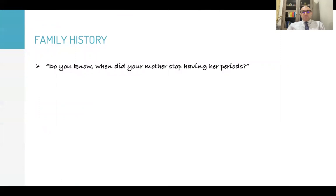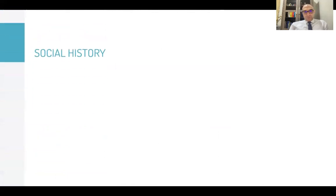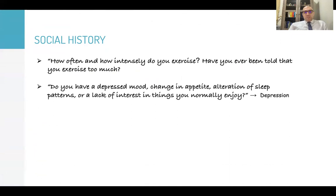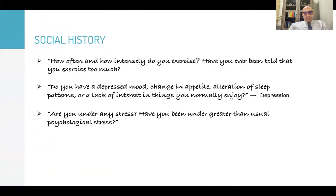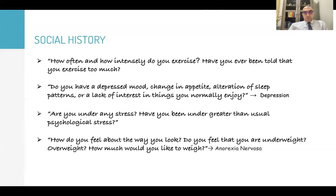Family history: 'Do you know when your mother stopped having her periods? Did anyone else in your family have early menopause? Has any member of your family been diagnosed with cancer?' — very important for familial cancer syndromes. Social history: 'How often and how intensely do you exercise? Have you ever been told that you exercise too much? Do you have depressed mood, changing appetite, alteration of sleep patterns, or lack of interest in things you normally enjoy?' — this might indicate depression. 'Are you under any stress? Have you been under greater than usual psychological stress?'